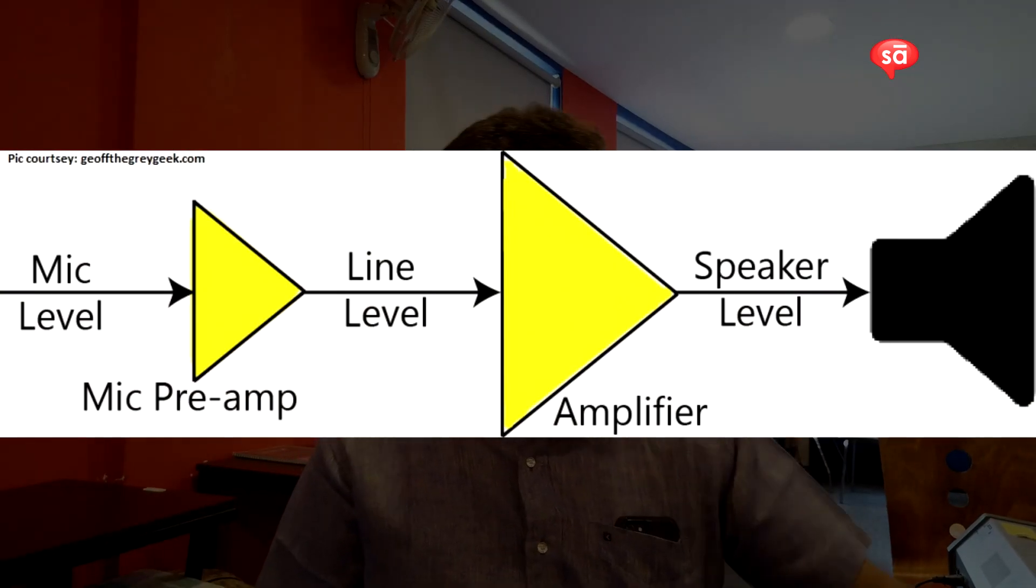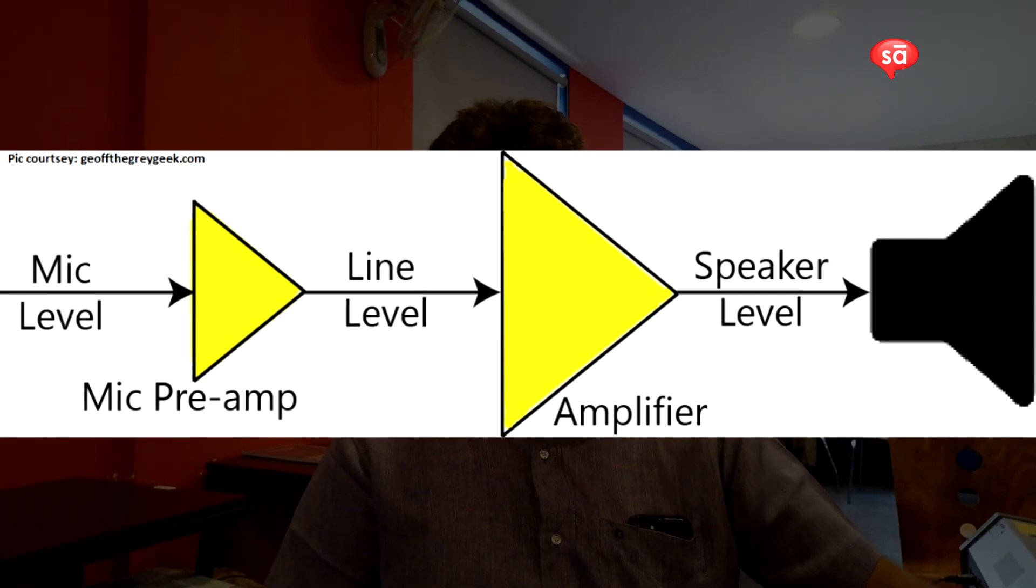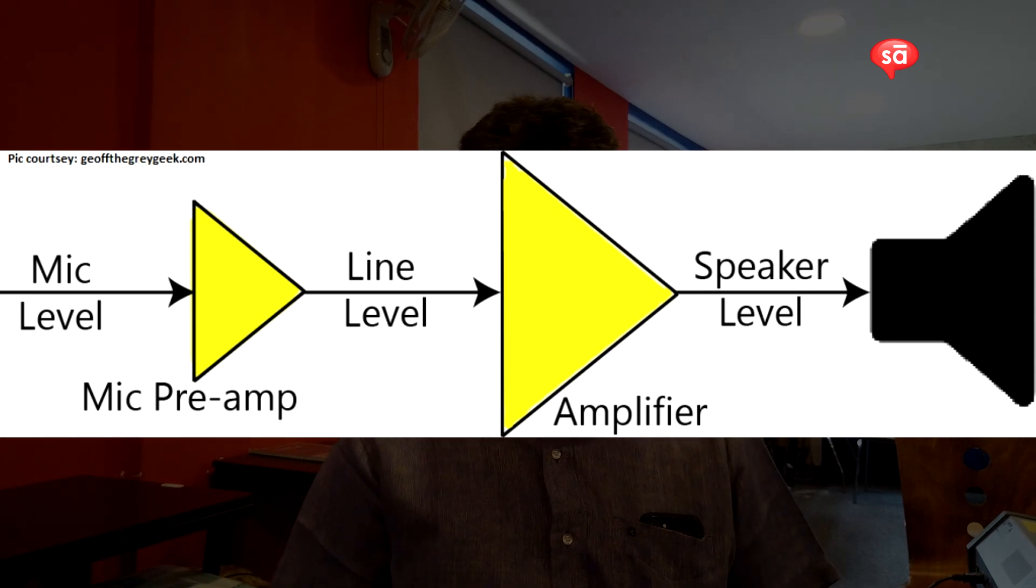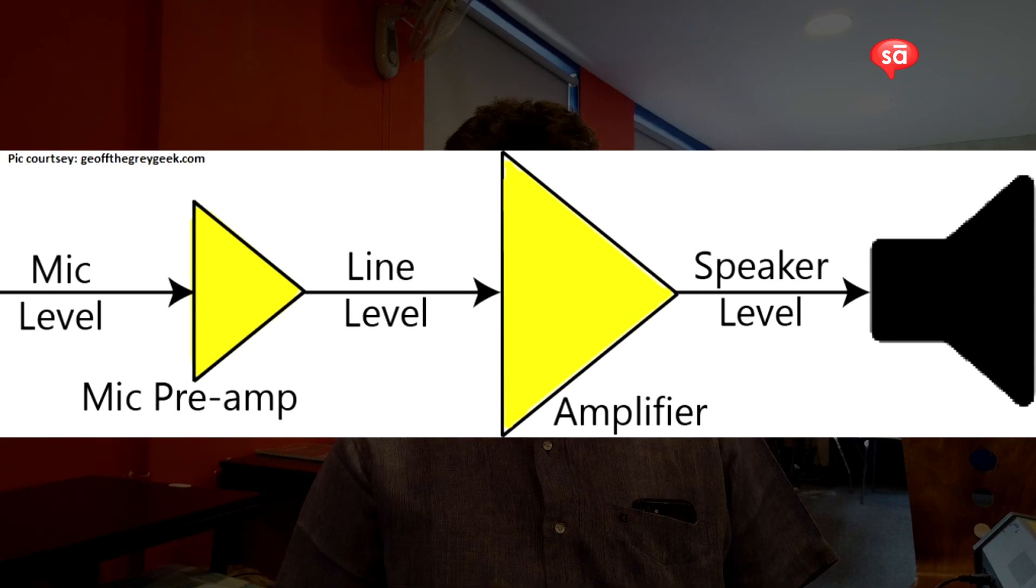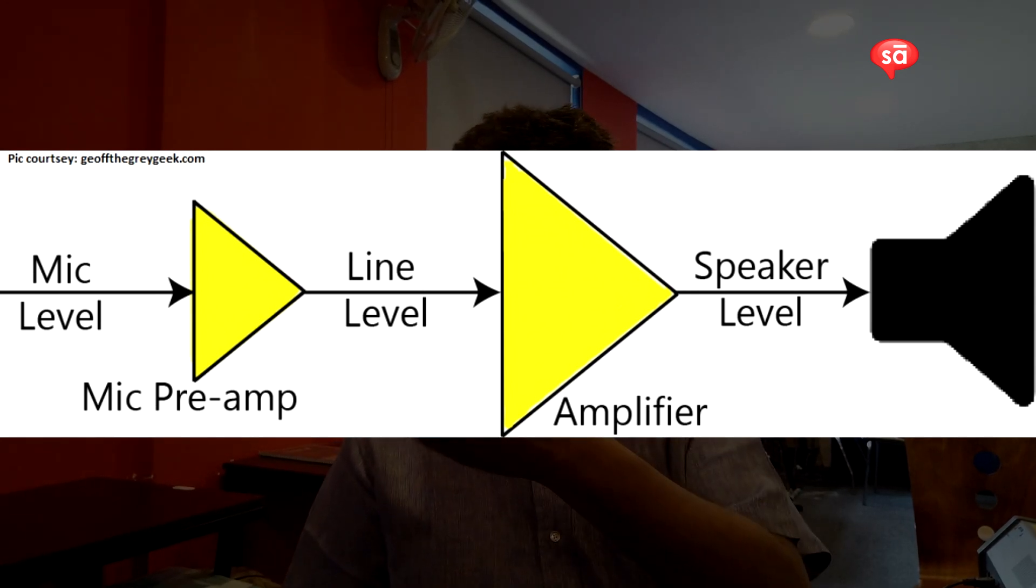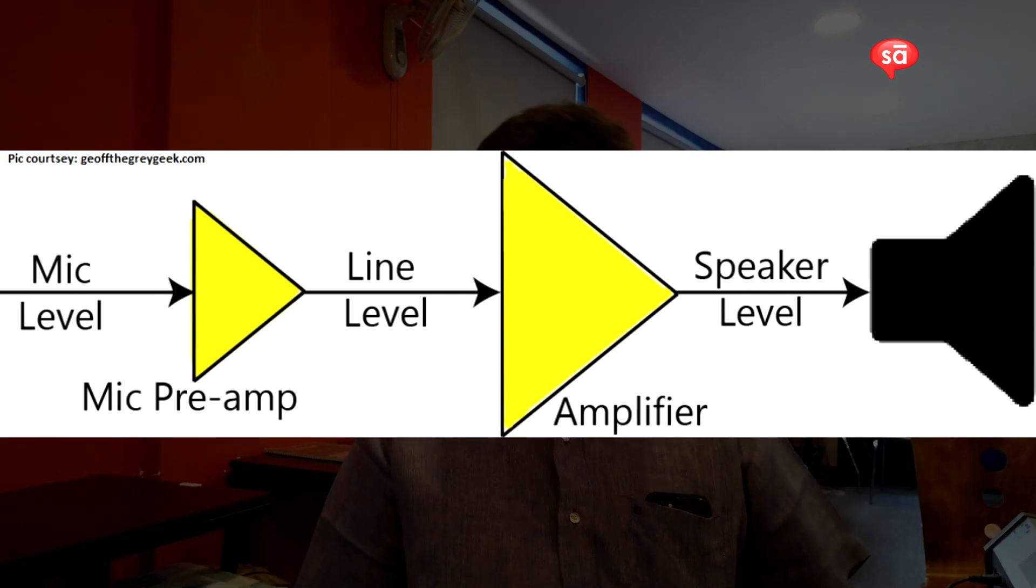The instrument level is an output from these keyboards and maybe an electric guitar. The next one is the line level. Line level is the output which comes out of a mixer.